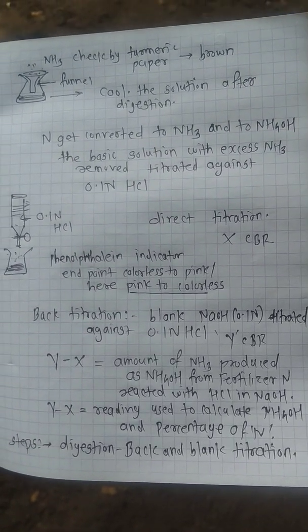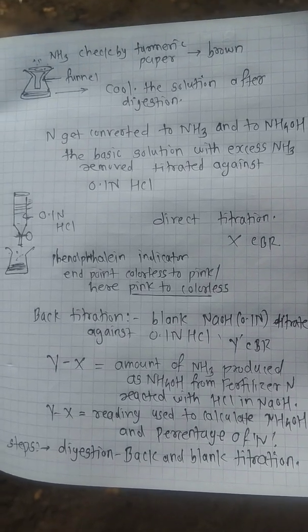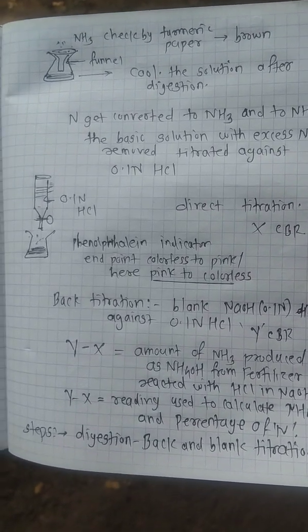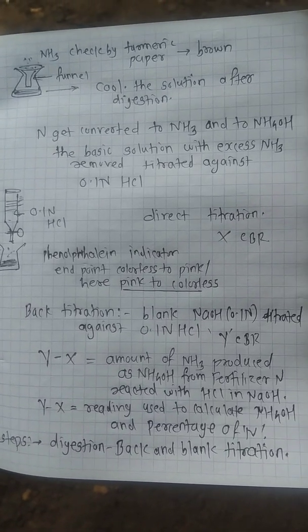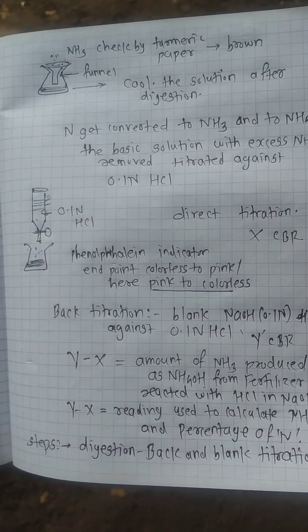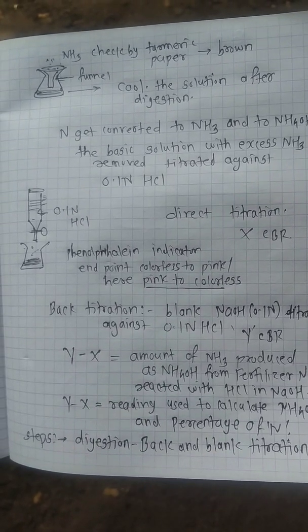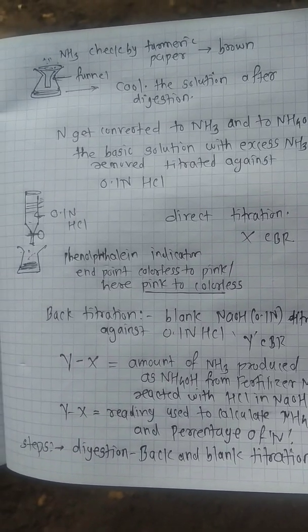Questions will be asked: what is back titration, what is blank titration, or what are the steps of this analysis after digestion? Then how is nitrogen detected by conversion into ammonia? What is the percentage limit for nitrogen in fertilizers? That range is from 14 percent to 16 percent.